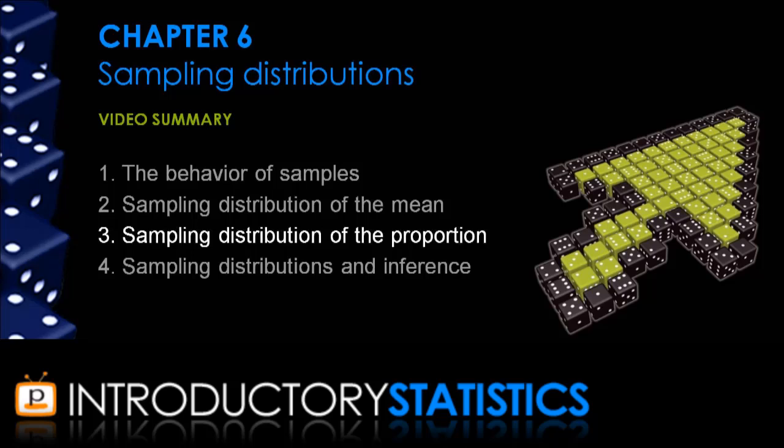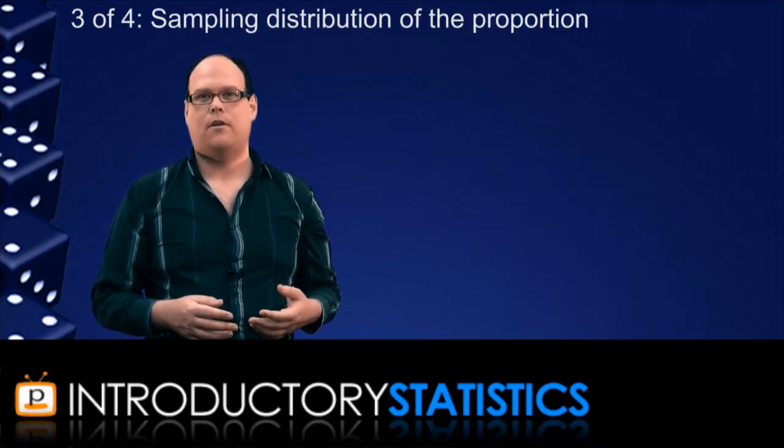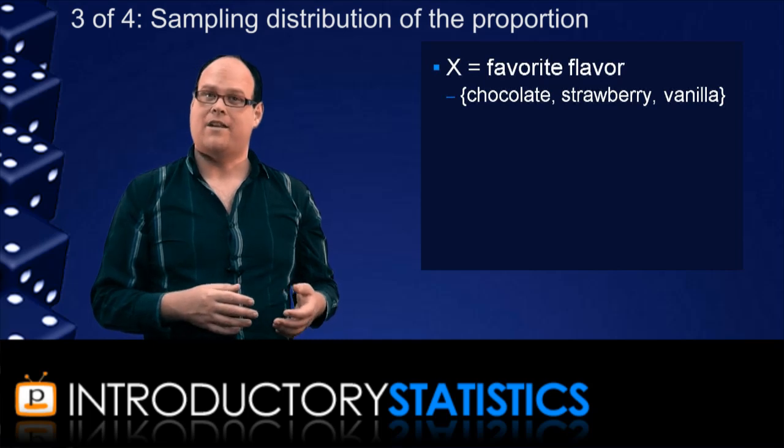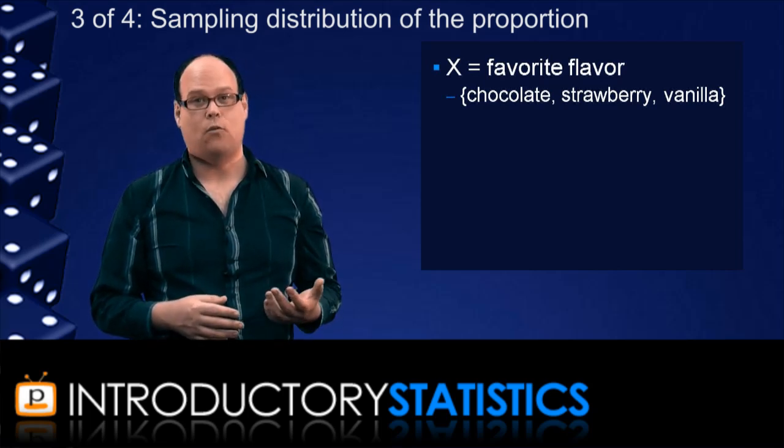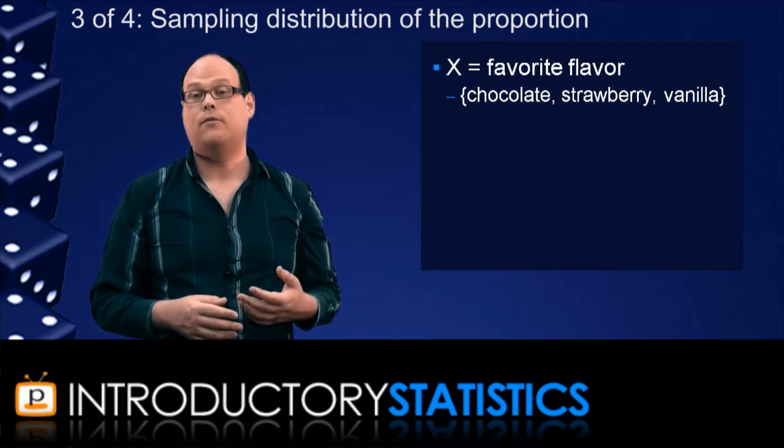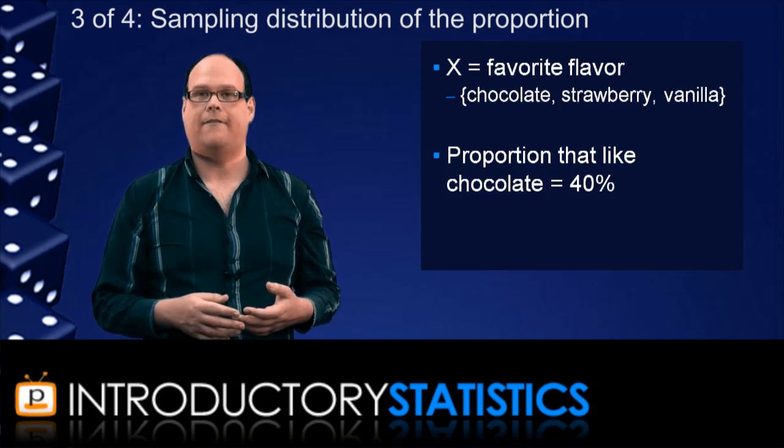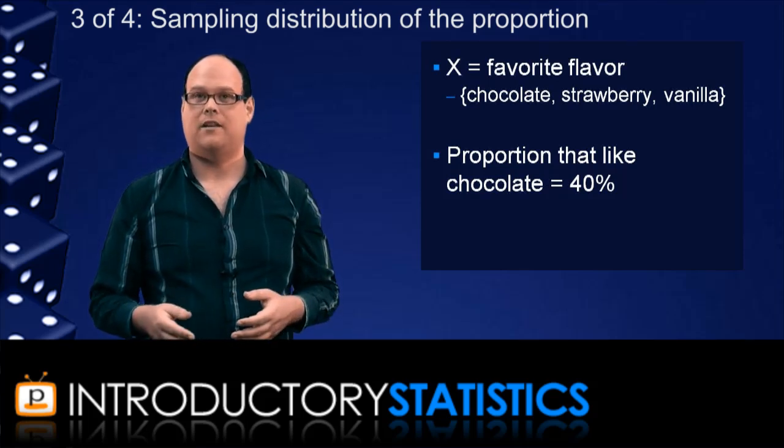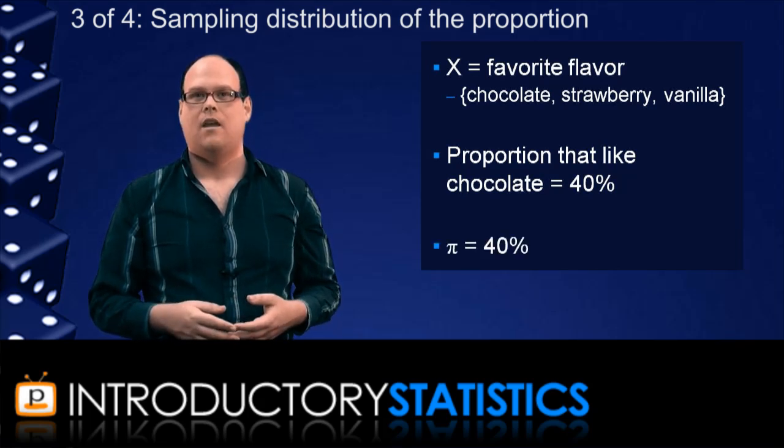If your variable X is a categorical variable, then that means its values are categories. For example, suppose you're looking at people's favourite ice cream flavour out of chocolate, strawberry or vanilla. Then those three flavours are the three categories of X. And you'll often be interested in the proportions for one or more of those categories. For example, you might be interested in chocolate and maybe 40% of people choose chocolate as their favourite flavour. So the population proportion for that flavour would then be 40%. We often denote the population proportion by the symbol pi.